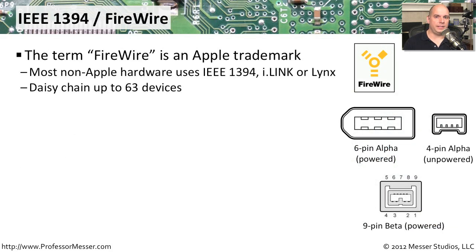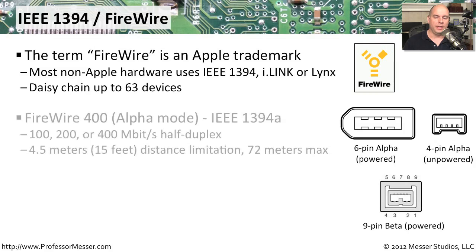Another type of interface connection we use is one called FireWire, also referred to as IEEE 1394. FireWire is what Apple calls it, but other manufacturers may call it iLink or Lynx. It allows you to connect up to 63 devices daisy chained onto one single FireWire interface on your computer.